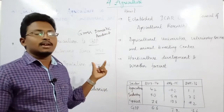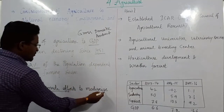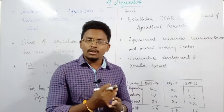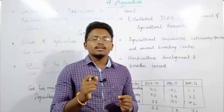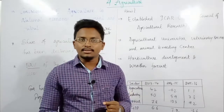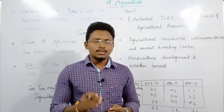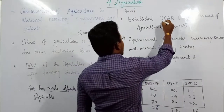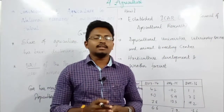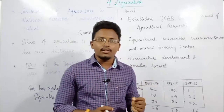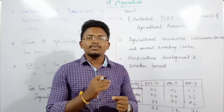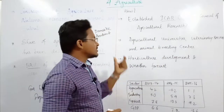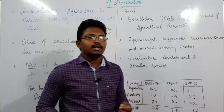Since agriculture is contributing less to the economy but more people are dependent upon it, the government has decided to modernize agriculture. To do this, the government established ICAR — the Indian Council of Agricultural Research — which helps in developing new technologies, new variety of seeds, and new types of research in agriculture. Agricultural universities have also been set up.